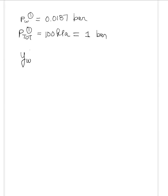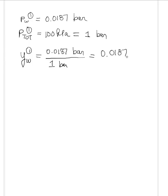The partial pressure of water in stream 1 is 0.01817 bar. The total pressure of stream 1 is 100 kilopascal, which is the same thing as 1 bar. Therefore, the mole fraction of water in stream 1 equals 0.01817 bar divided by 1 bar, which equals 0.0187. That completes step 1. Step 2 is to use those mass balance equations for air and water to solve for the mole fraction of water in stream 3.